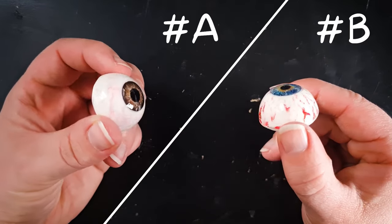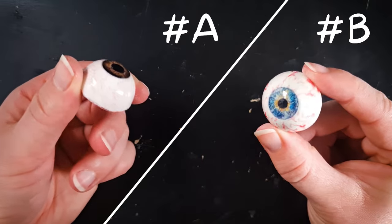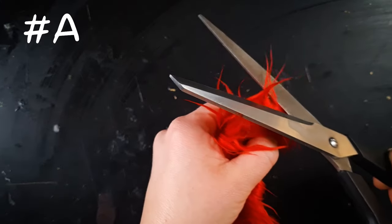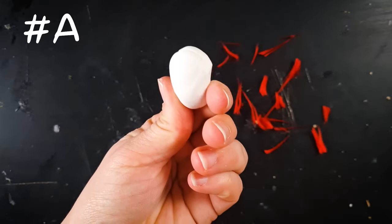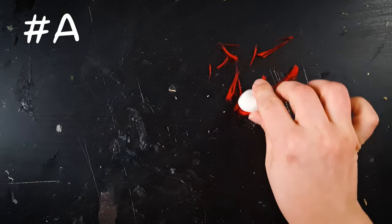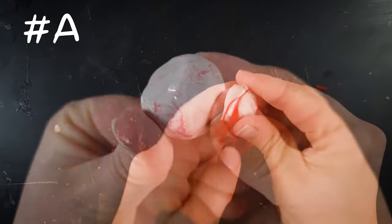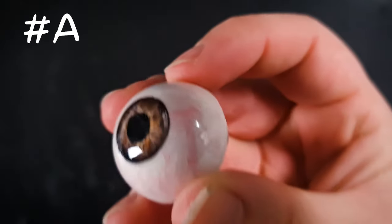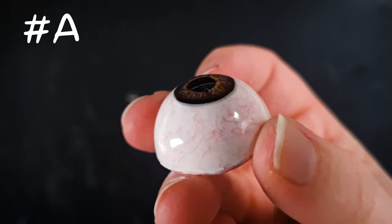If you want red eyes here's two easy ways to achieve that added effect. Use red flocking or cut out some fun fur into small pieces. Mix it into your raw polymer clay and knead it together until it looks even. Then continue as normal from step three onwards and this is what your final eyes will look like.